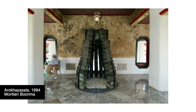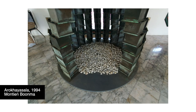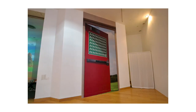Another piece, also a metal sculpture with a place to put herbs inside, is made in the form of a lung. This piece is called Arokaya Sala, which translates directly to The Pavilion of No Sickness. It was made shortly after his wife passed away and he fell ill himself.